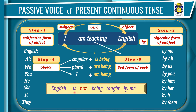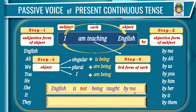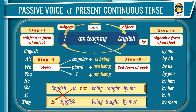Where there is a helping verb and you want to change the sentence to negative, just write 'not' after the helping verb — for example: 'is not being', 'are not being', or 'am not being'. To make it interrogative, move 'is' to the beginning: 'Is English being taught by me?' For both interrogative and negative: 'Is English not being taught by me?'